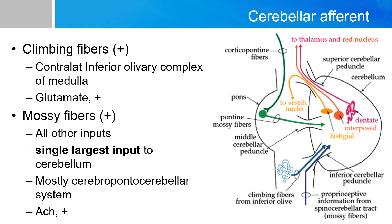The mossy fibers receive input from all other structures, making them the largest input to the cerebellum. They form excitatory synapses in the granule cell layers and form the glomerulus, as discussed. They indirectly excite the Purkinje cells, unlike the climbing fibers. Most of the mossy fibers are formed from the cerebral pontocerebellar system.